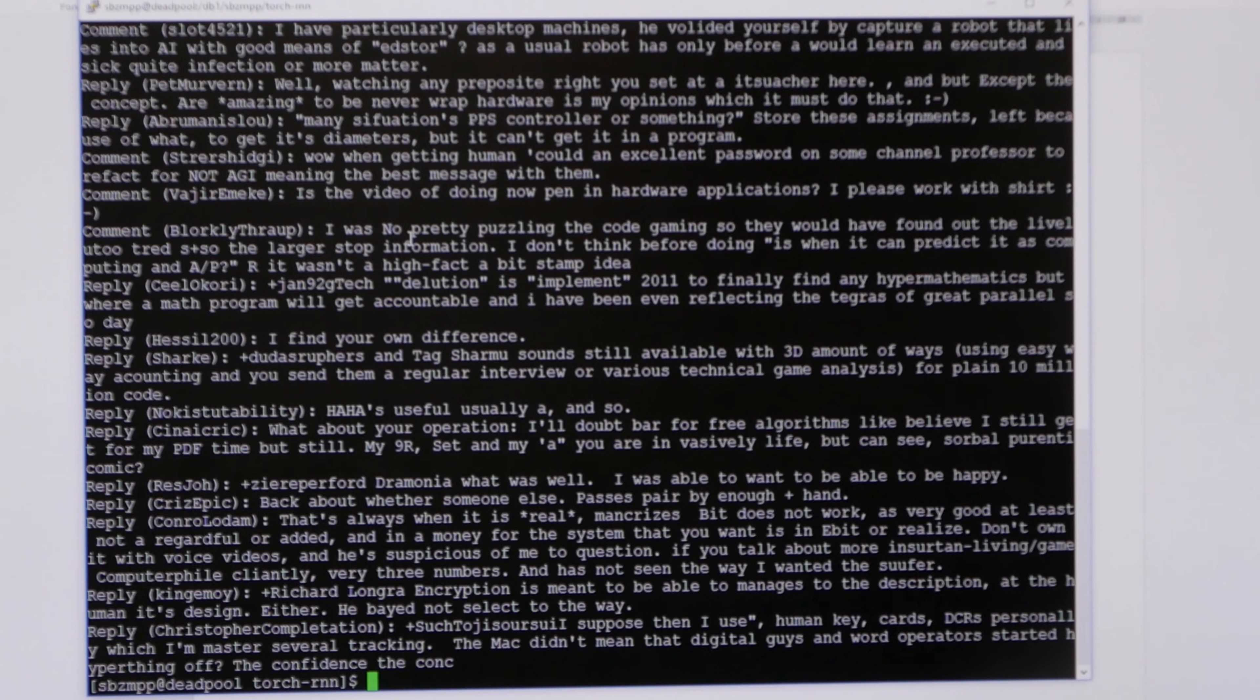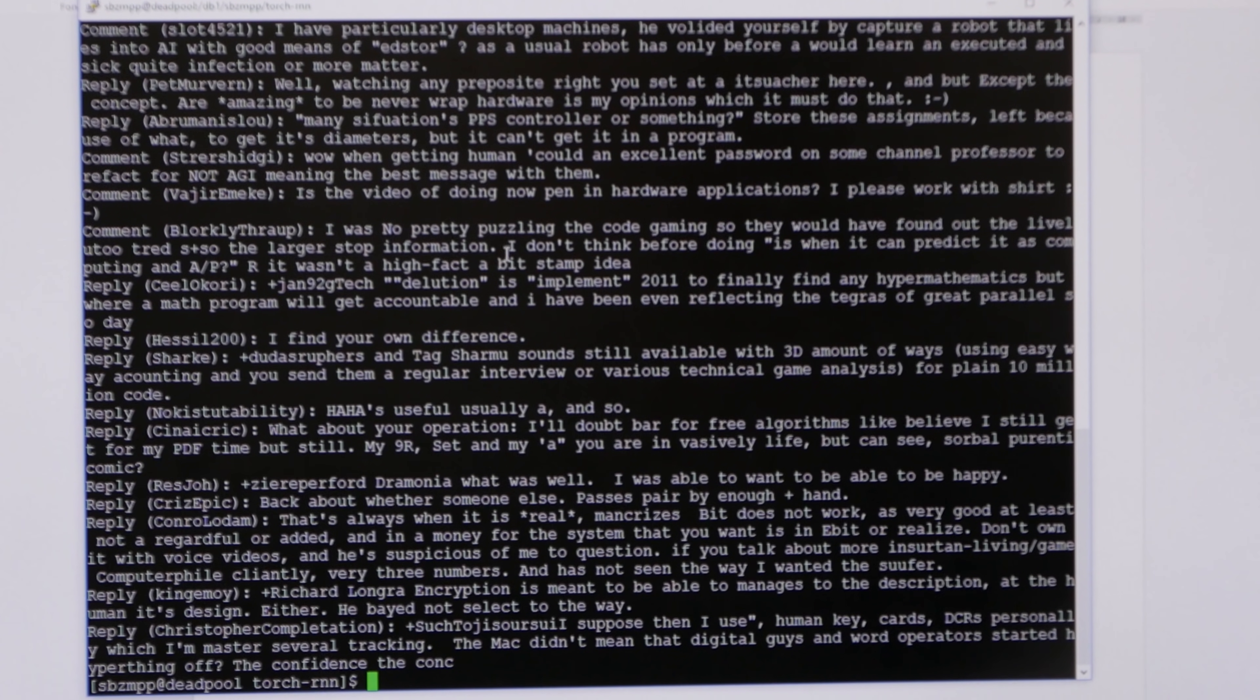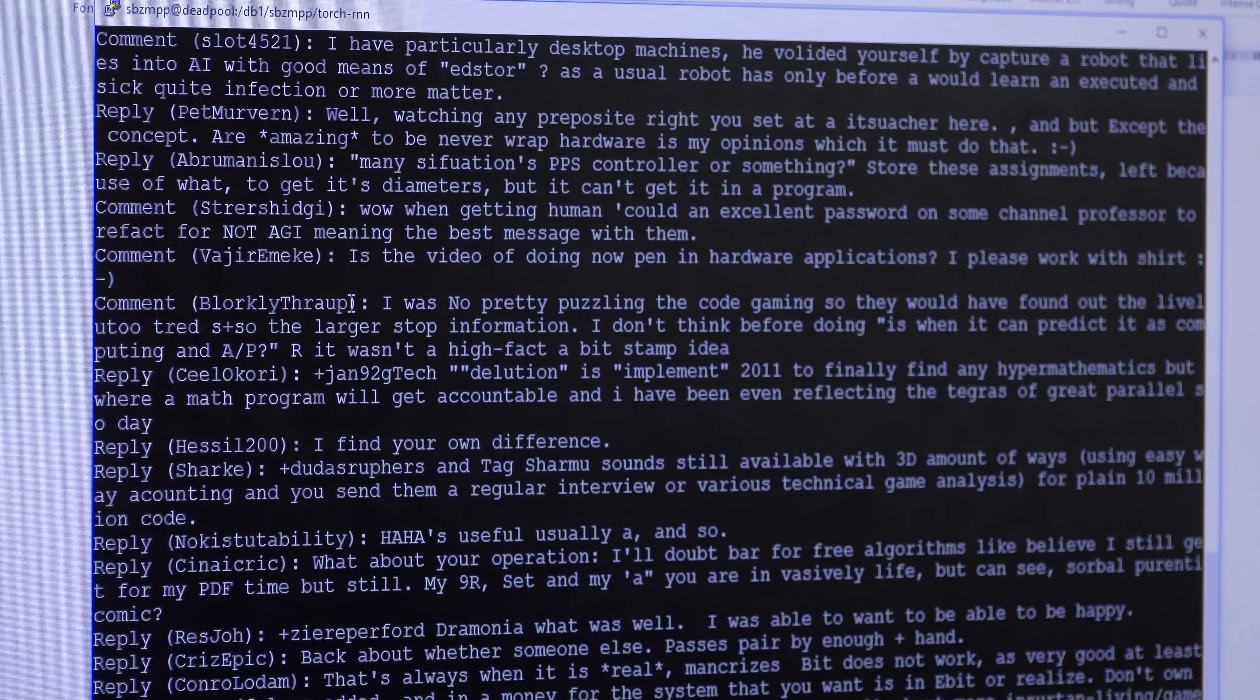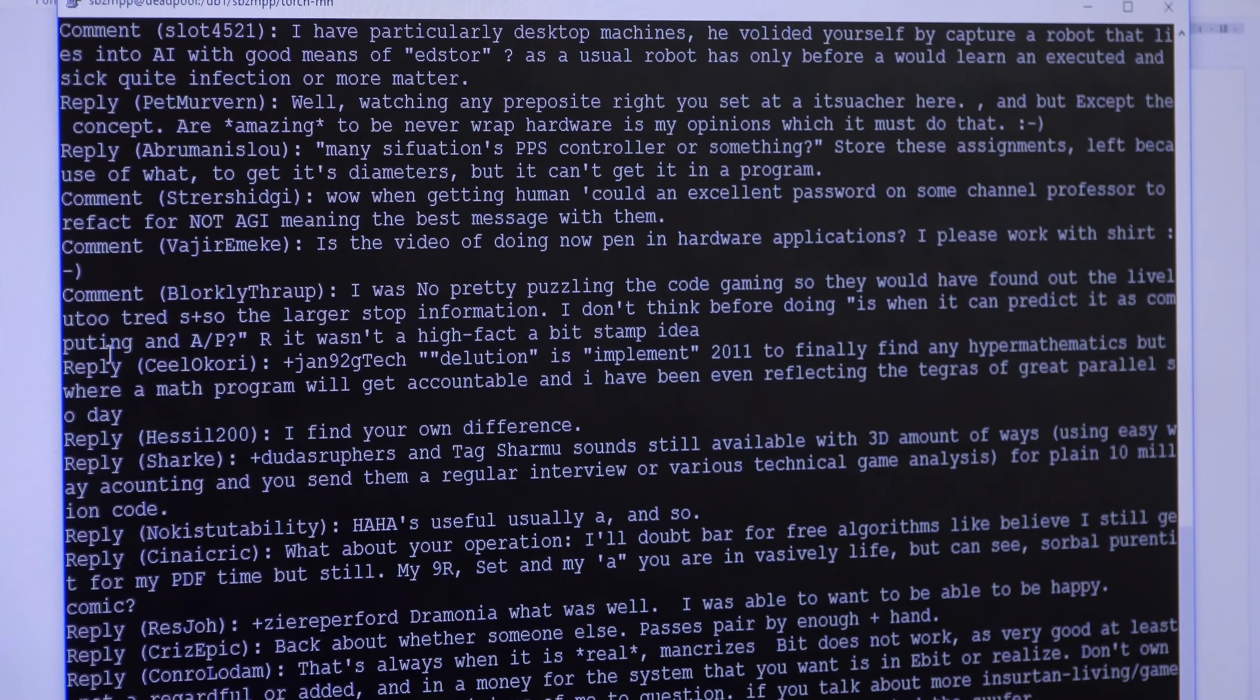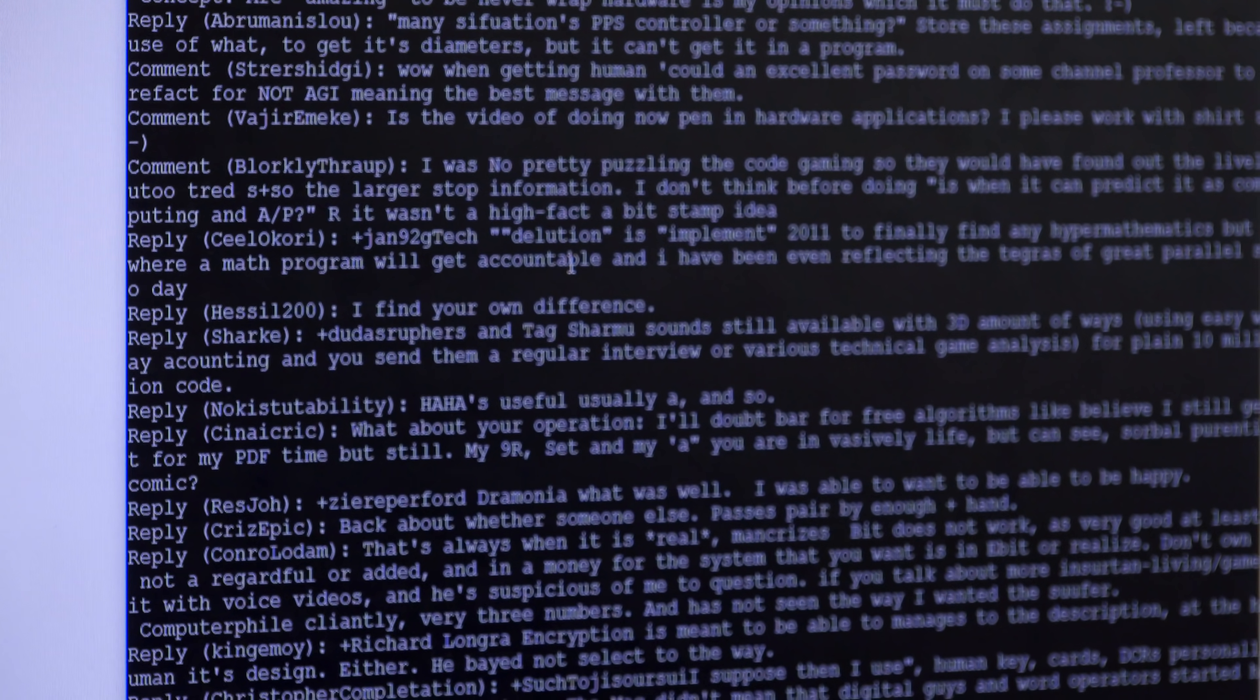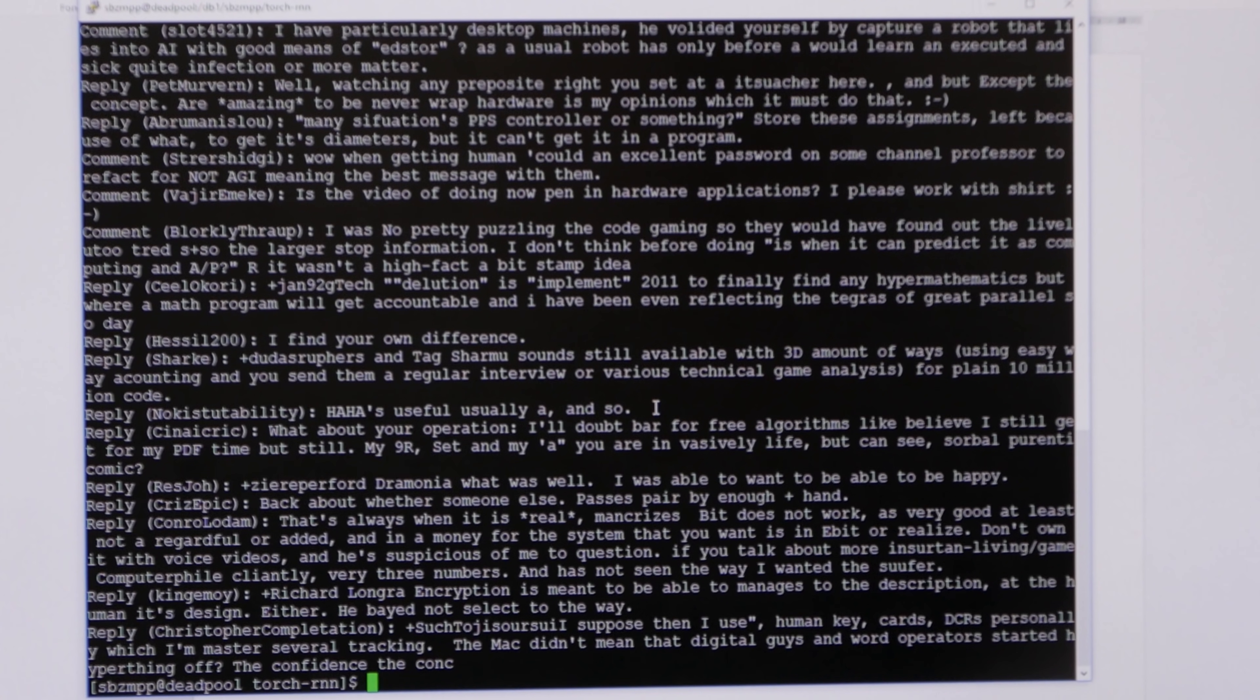So you can see we've got comments, we've got replies. At first glance, it looks plausible. When you actually read into the comments, they're very bizarre. Let's pick a couple and see what's... So, this guy by Blorkythropp. Now, that might be a real person, but it probably is just a completely made-up username. 'I was no pretty puzzling the code, gaming. So, they would have found out something tread, the largest stop information.' That's a bit odd. This guy, Hessel200, has replied, 'I find your own difference. Profound, certainly. Ha-ha's useful, usually A, and so.' I mean, it's got the punctuation correct. It's finishing sentences with full stops. Let's try again.